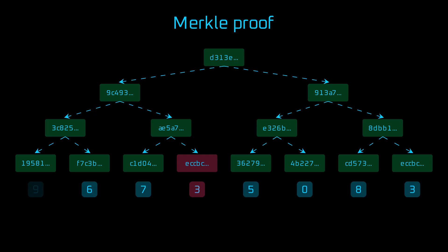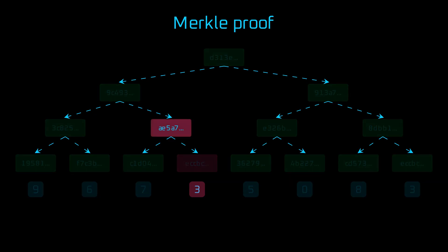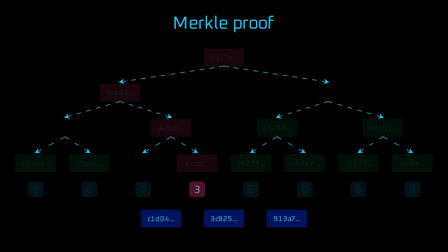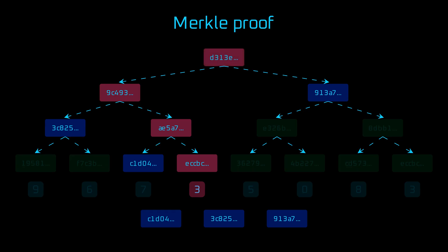To prove that an item belongs to a tree, we need to recreate a path of hashes from the leaf to the root. We can do it using only sibling hashes, which make up the Merkle proof. By hashing the first sibling hash with the leaf node and continuing up the tree, we eventually reach the root hash, verifying the proof.